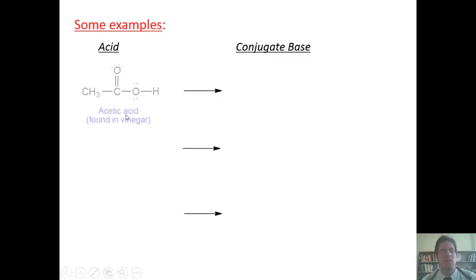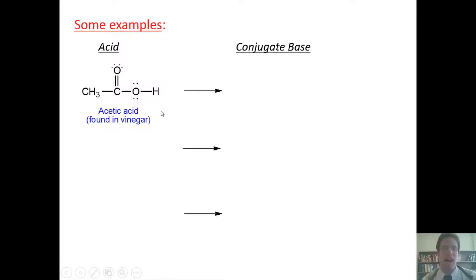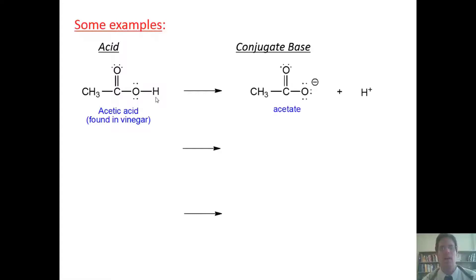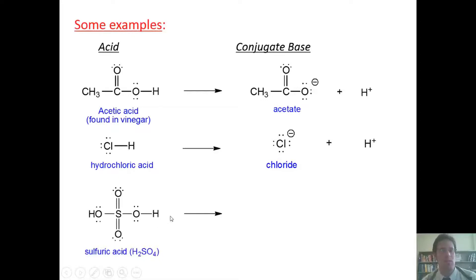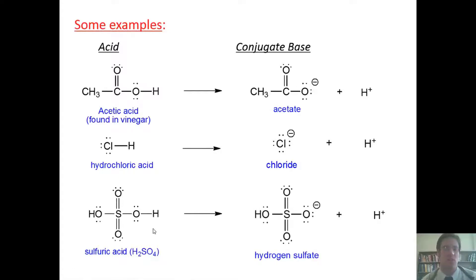Here are some examples. If I've got acetic acid, to draw the conjugate base, all you have to do is take the acidic hydrogen, remove it, and replace it with a negative charge. The conjugate base of acetic acid is acetate. For hydrochloric acid, I remove the hydrogen and replace it with a negative charge — so chloride is the conjugate base of hydrochloric acid. For sulfuric acid, I take one of the acidic hydrogens, remove it, and replace it with a minus charge — so hydrogen sulfate is the conjugate base of sulfuric acid.